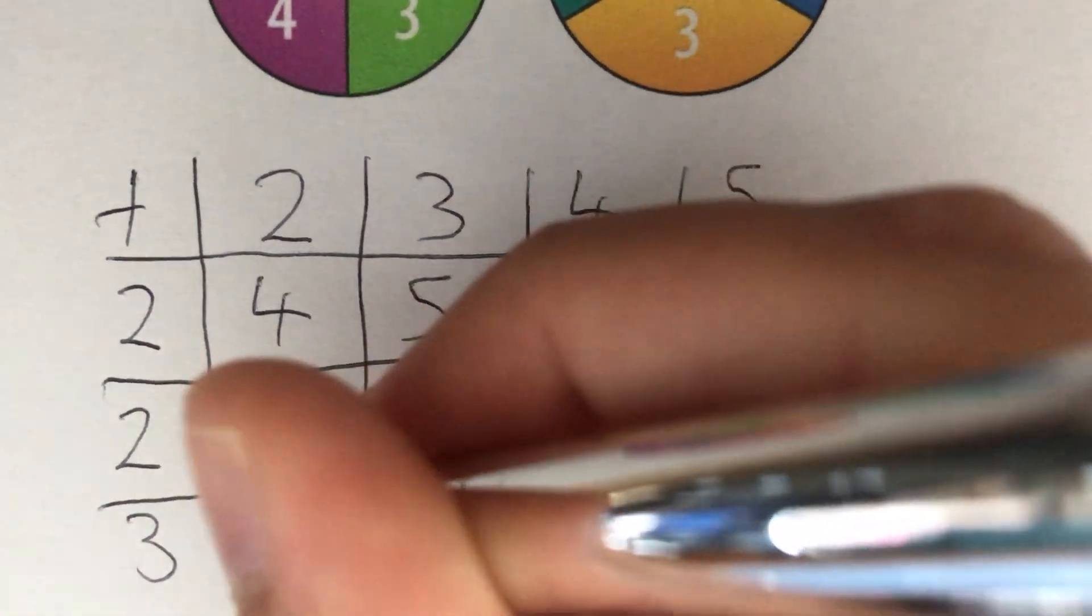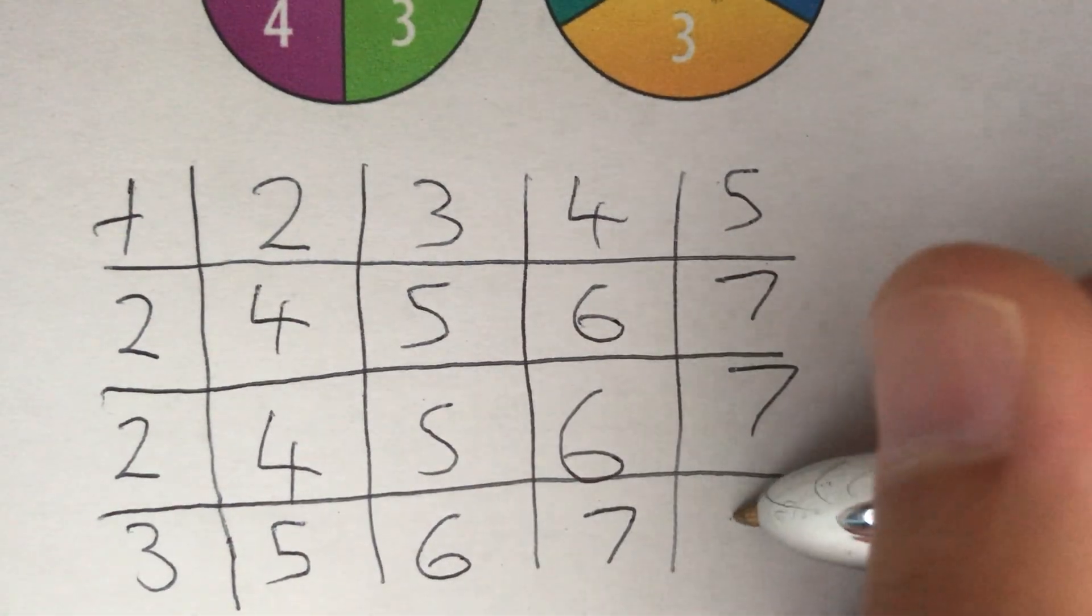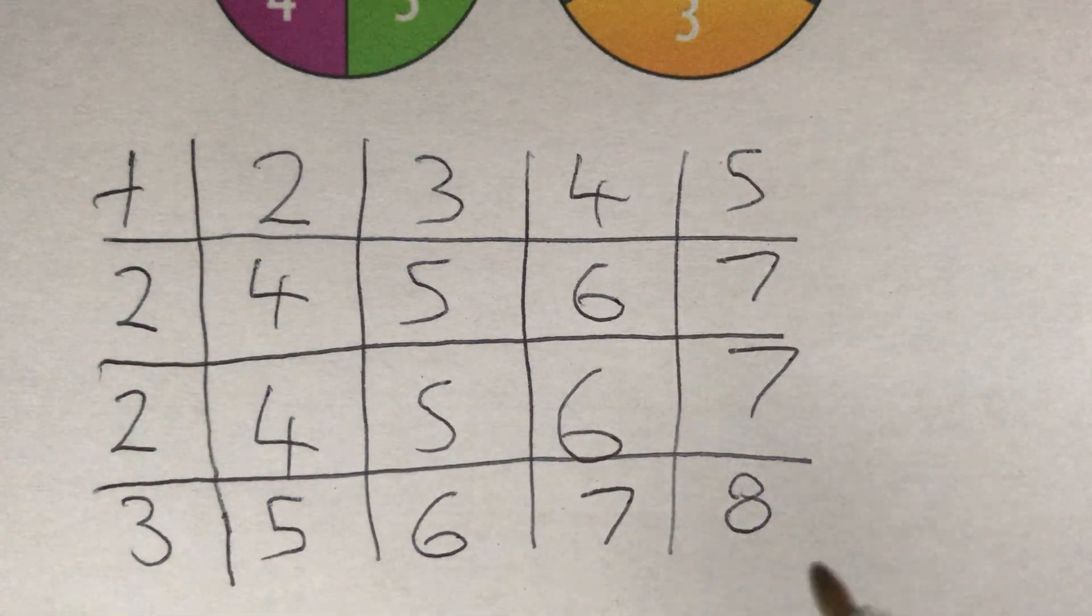And then a 2 and a 3 would give us 5. 3 and a 3 would give us 6, 7 or 8. So we've got our sample space diagram.